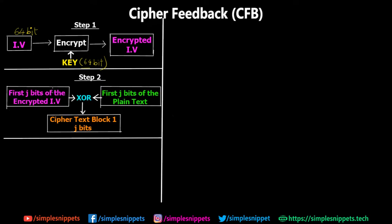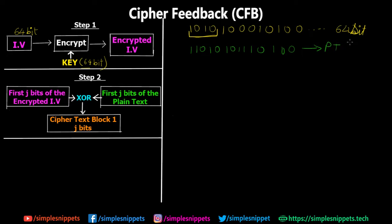Now here's where things get a little bit tricky — step number two. We first take the first j bits of the encrypted IV. Let's say we're going to take the first four bits from the left. Then we take the first j bits of the plain text — so again the first four bits of the plaintext. We perform an XOR operation between the two: j bits of the encrypted IV XOR'd with j bits of the plain text, and we get cipher text block one of j bits. Let's say the XOR result is some four-bit value.